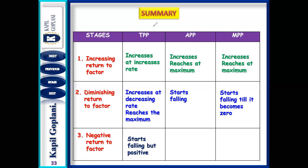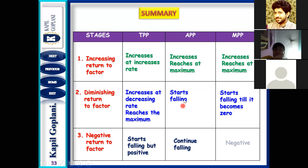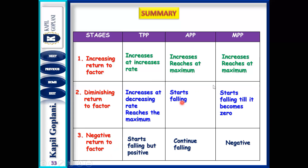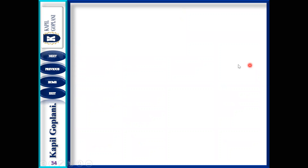Moving on to AP — in the negative return stage, AP also falls. And MP? MP turns out to be negative. So these were your TP, AP, and MP reactions across the three stages.